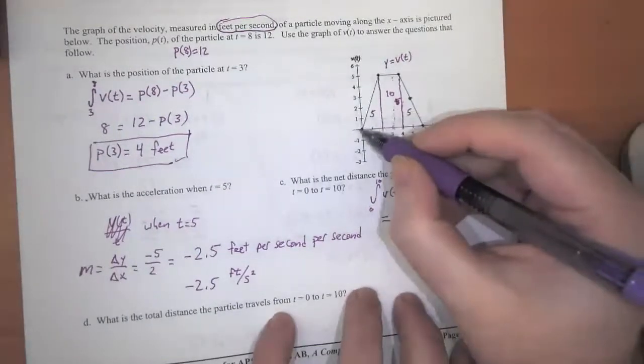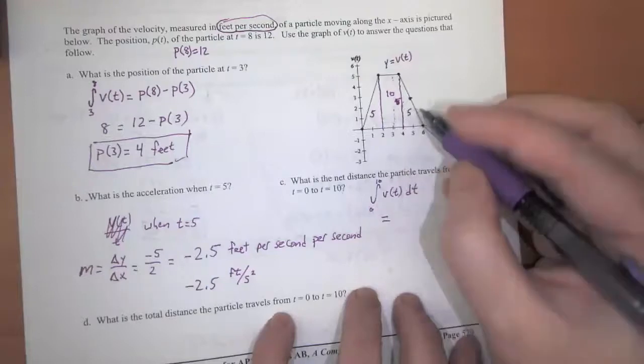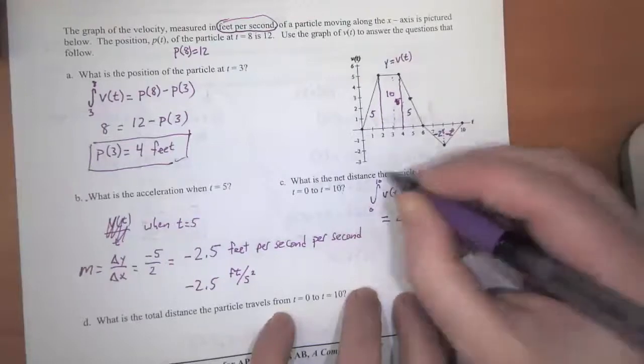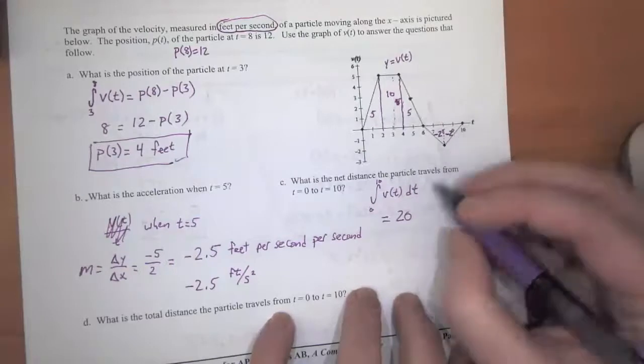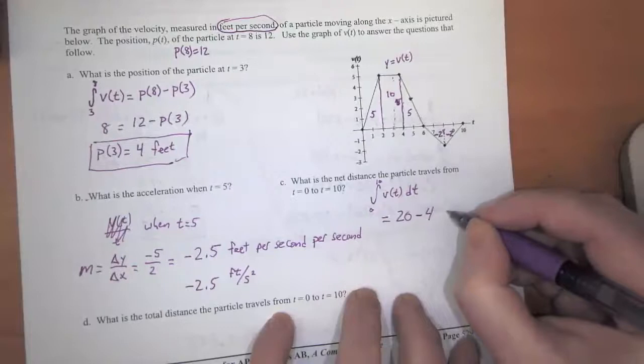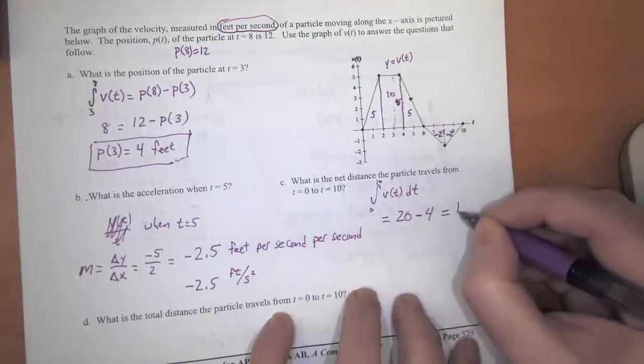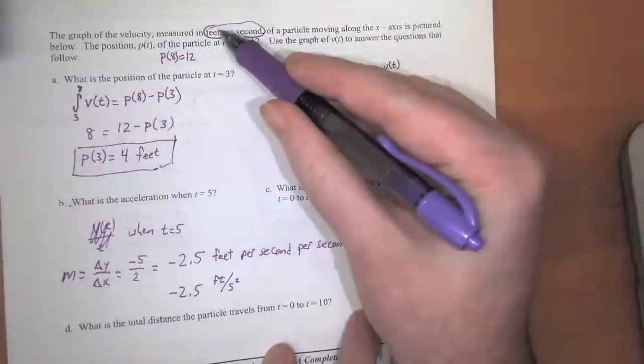It started off, the particle moved five and then 10 and then five for a total of 20 units to the right. And then it moved four units back to the left. And so the net distance the particle traveled was 16 feet.